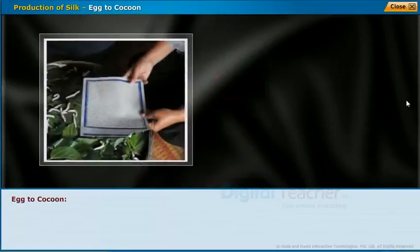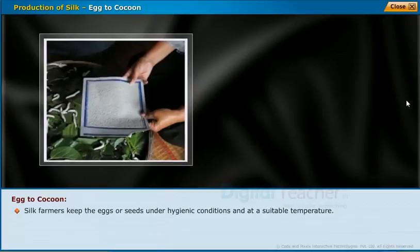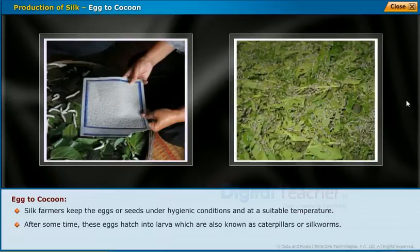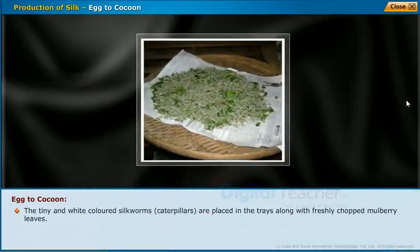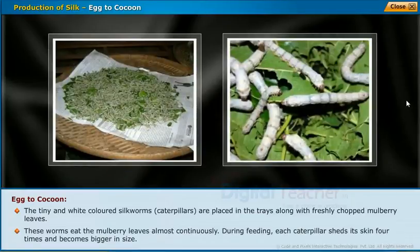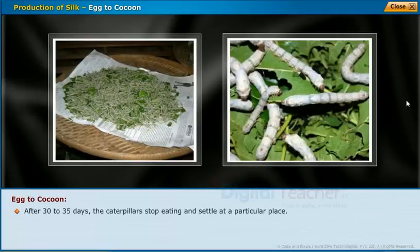Silk farmers keep the eggs or seeds under hygienic conditions and at a suitable temperature. After some time, these eggs hatch into larvae, also known as caterpillars or silkworms. The tiny white-colored silkworms are placed in trays along with freshly chopped mulberry leaves. These worms eat the mulberry leaves almost continuously, and during feeding each caterpillar sheds its skin four times and becomes bigger in size.